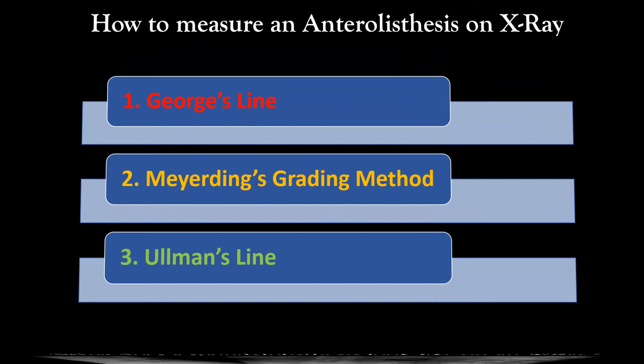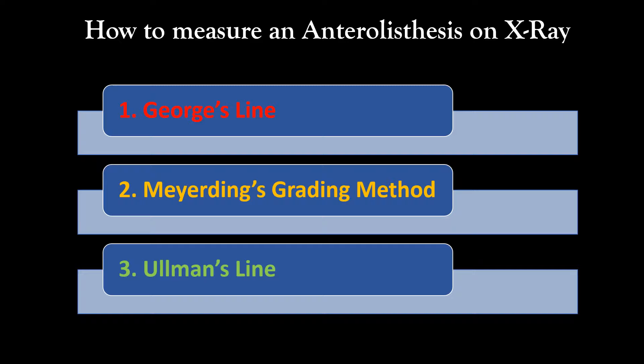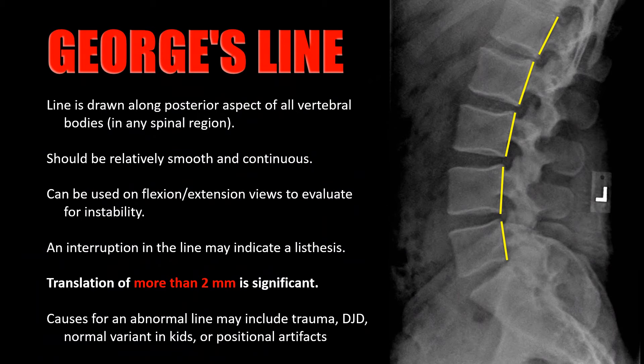There are three different widely accepted methods of measuring for an anterolisthesis: George's line, Meyerding's, and Ullmann's. George's line is the most widely accepted line of mensuration for measuring for an anterolisthesis.